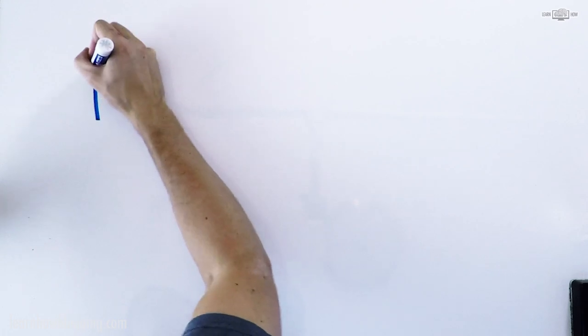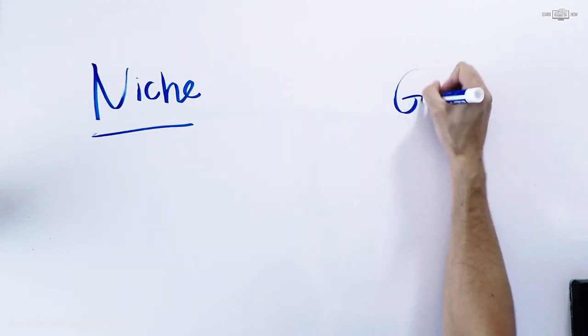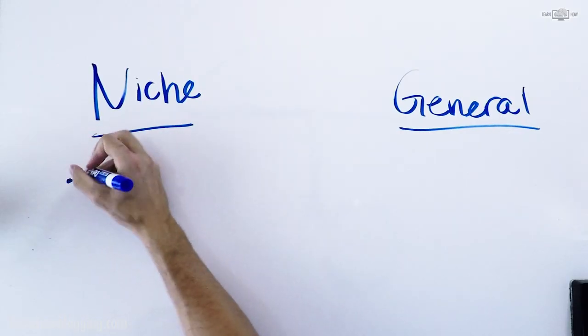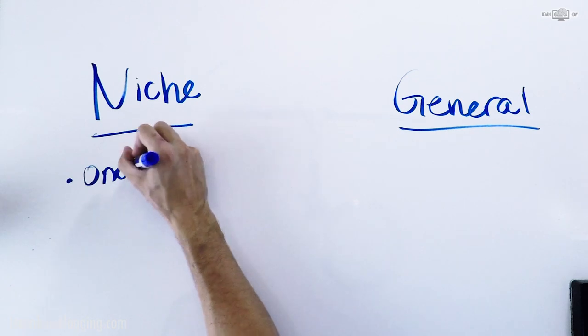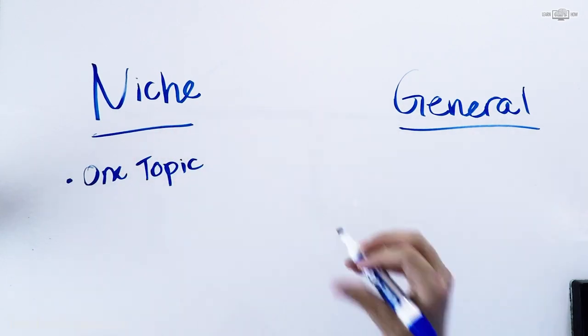Niche blogging would be something focused on a very specific topic — one topic. This could be something like art, or even more focused, you could do painting. It could be focused on cooking, Pilates, or basket weaving. Any sort of very specific niche topic would be considered a niche blog.